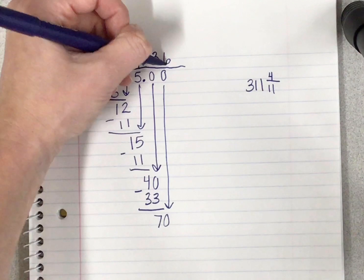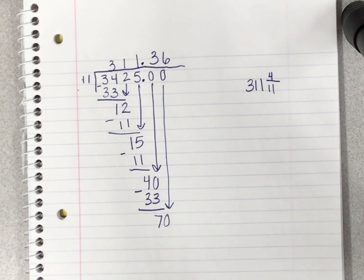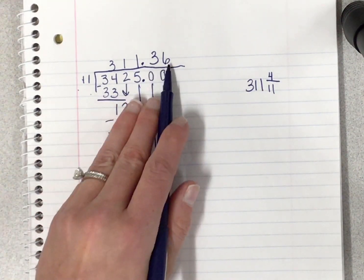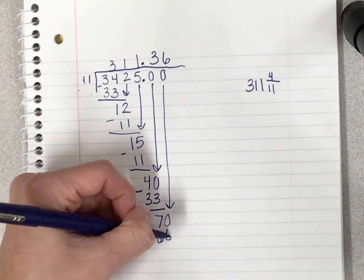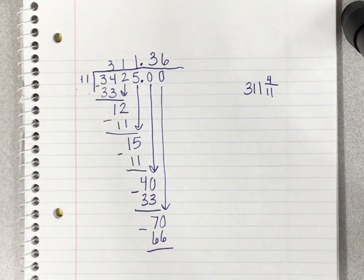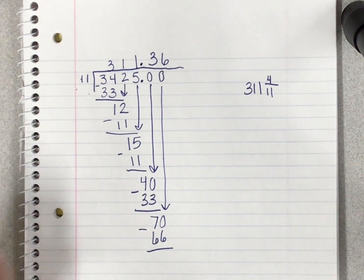11 goes into 70 how many times without going over? 6. So I place that number above my zero. 11 times 6 is 66. I place that number below my 70 and I subtract. 70 minus 66 is 4.